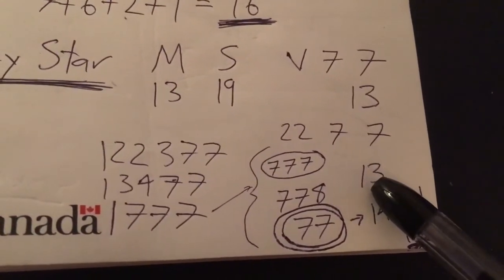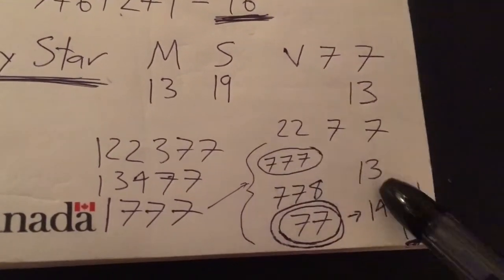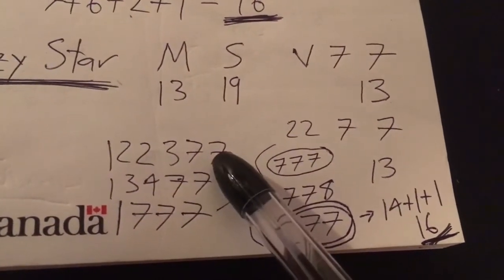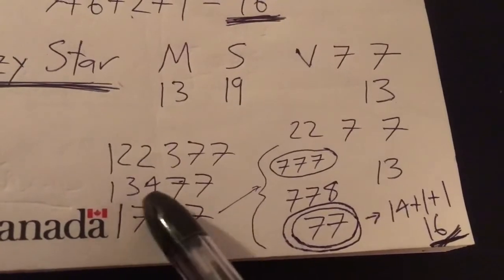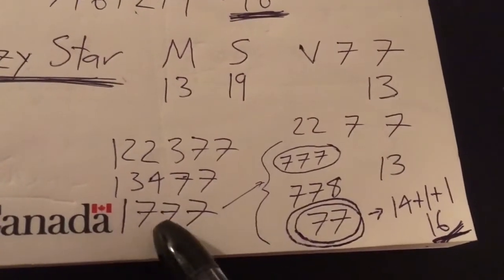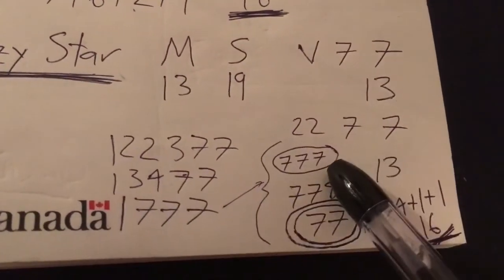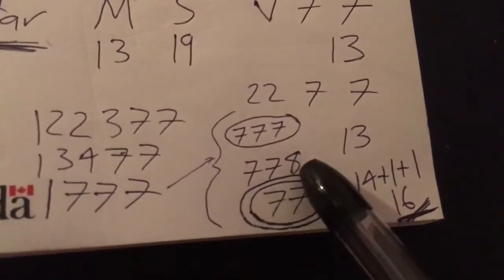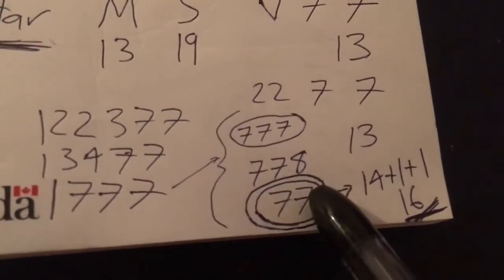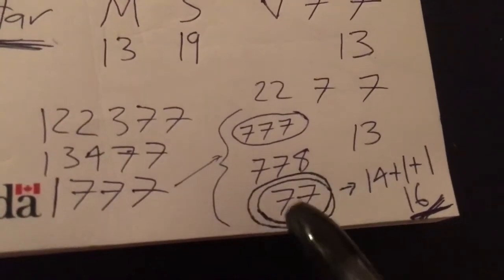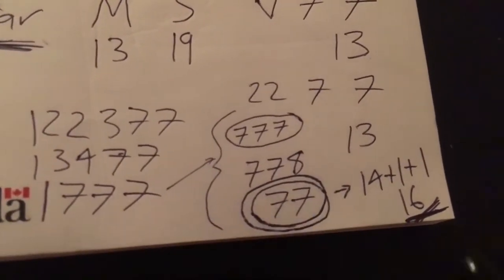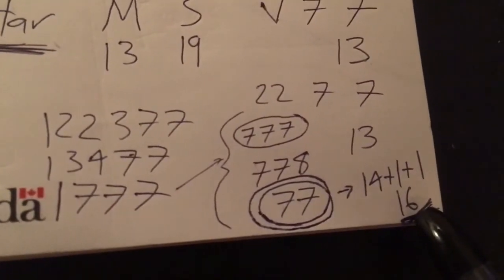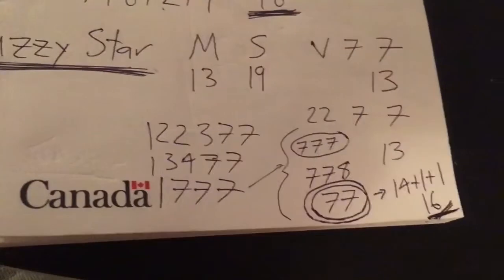So we got 1, 2, 2, 3, 7, 7. You have 1, 3, 4, 7, 7. You have 1, 7, 7, 7. And you have a circled 7, 7, 7, or a 7, 7, 8, or a doubly circled 77, which is just 14 plus 1 plus 1, which is 16. So I thought that was interesting.